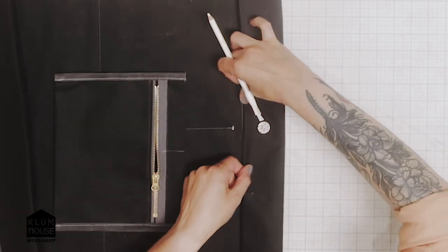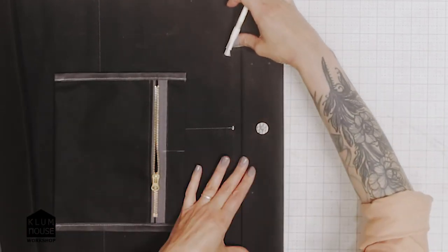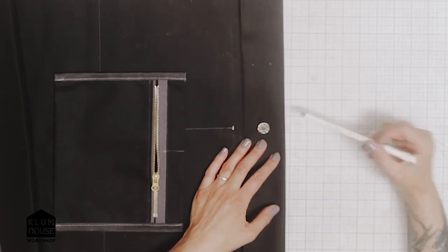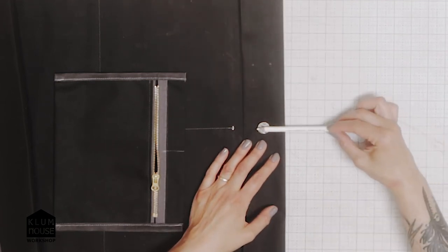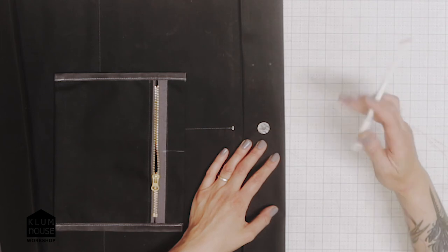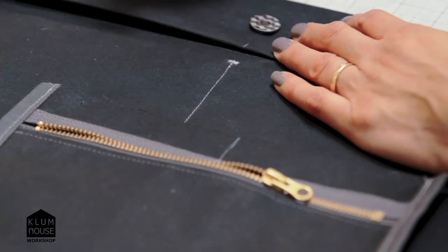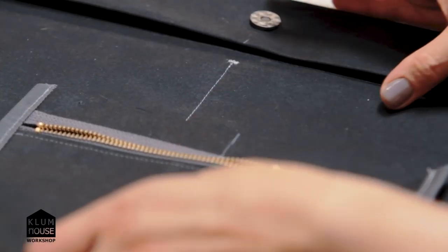I also want to know the center point of my hem. The center point of my hem runs right through the center of the magnetic snap, so I'm just going to carry that down with a little chalk mark.